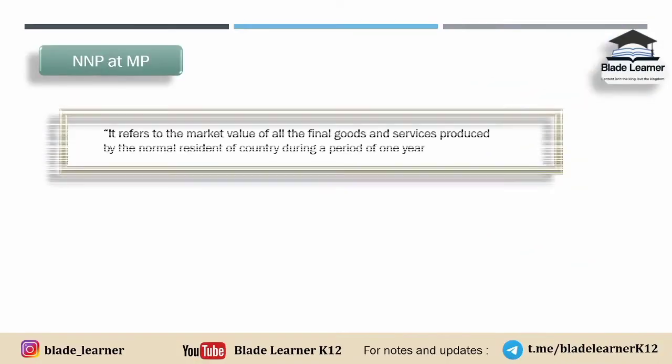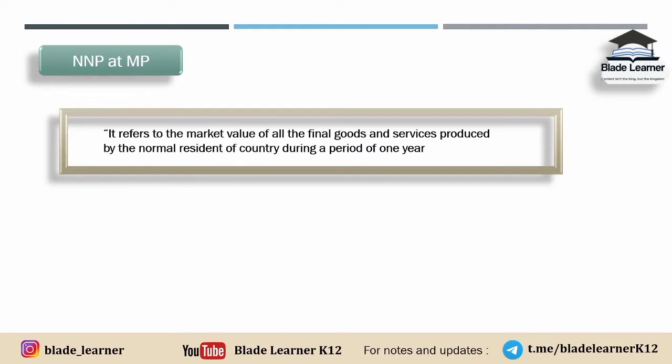NNP at market price — Net National Product at market price. So NNP at MP, or Net National Product at market price, refers to the market value of all the final goods and services. Since we are talking about market price, obviously market value hi aayega — the price at which a product, like a phone, is being sold in the market. That is its market value or market price. This is the concept. So NNP at MP refers to the market value of all the final goods and services produced by the normal residents of the country during a period of one year.